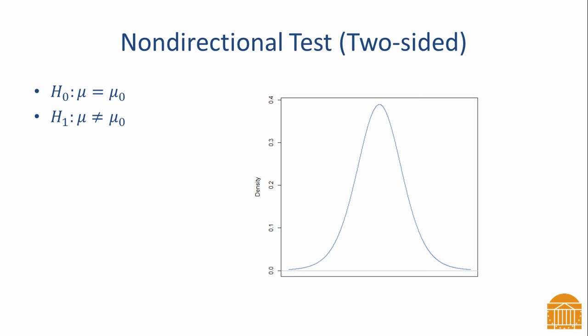This problem is an example of a two-tailed test. Extreme values, both positive and negative, are consistent with the alternative hypothesis. That is, the rejection region is in both tails of the distribution as shown by the shaded blue regions on the slide.